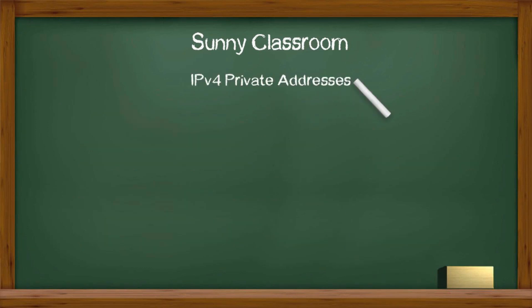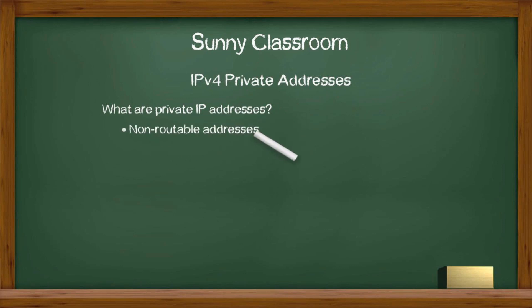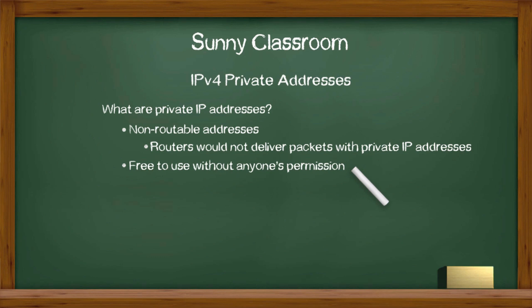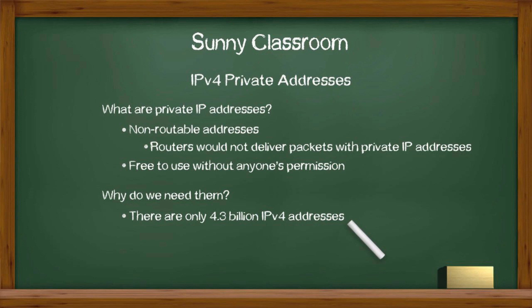Last but not least, private IP addresses. What are private IP addresses? A private IP address is also called a non-routable IP address because routers would not deliver packets with a private IP address. Everyone can use private IP addresses in their own network — they are free to use without anyone's permission. There are about 4.3 billion IPv4 addresses. As more people have more devices connected to the internet, IPv4 addresses were quickly running out. By the year 2011, all IPv4 addresses were gone. That's why private IP addresses came to the rescue.